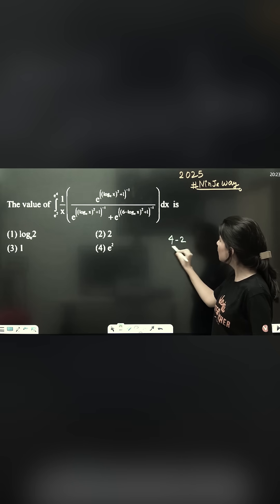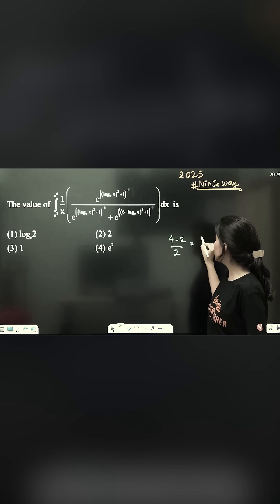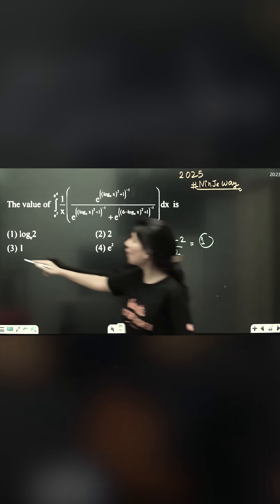Four minus two upon two, so this is one. One. That means option three. Absolutely right. That's the way, ninja way.